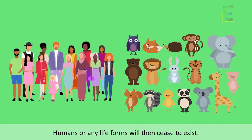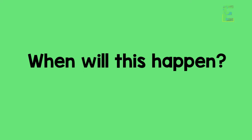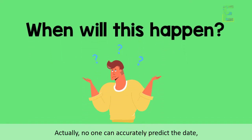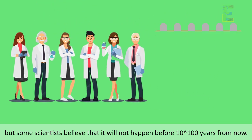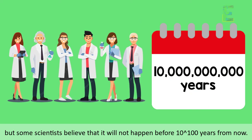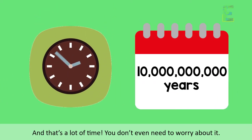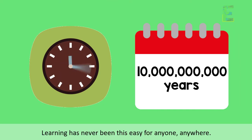So the question is, when will this happen? Actually, no one can accurately predict the date, but some scientists believe that it will not happen before 10 to the power of 100 years from now — and that's a lot of time, so you don't even need to worry about it. So that's it! This is Earth Pen — learning has never been this easy, for anyone, anywhere. Have a nice day!